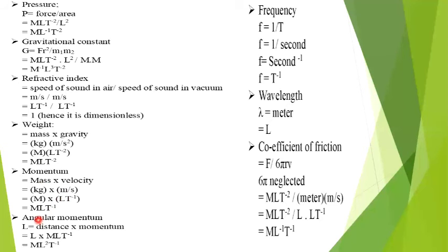If we work on angular momentum, the formula is distance into momentum. The final answer for momentum is MLT⁻¹ and distance is length, symbol L. We solve L times L, getting L squared, and the final answer for angular momentum is ML²T⁻¹.